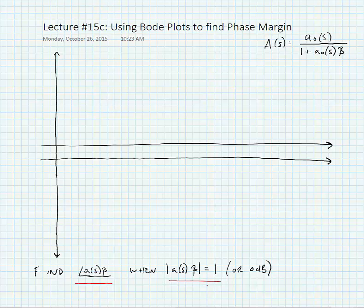First let's plot our open loop gain. We're assuming that we still have that one pole op amp where a(s) is equal to a₀ divided by 1 plus s divided by ω_p1.